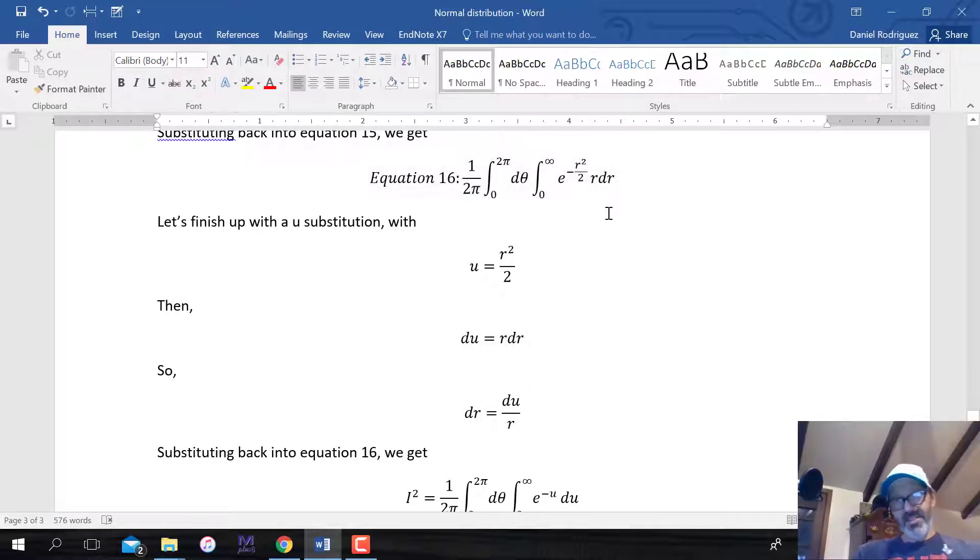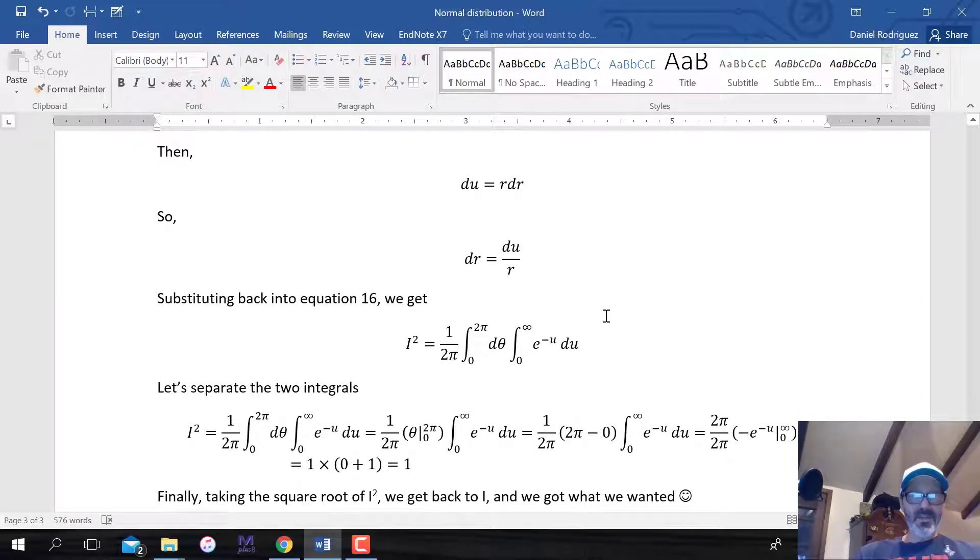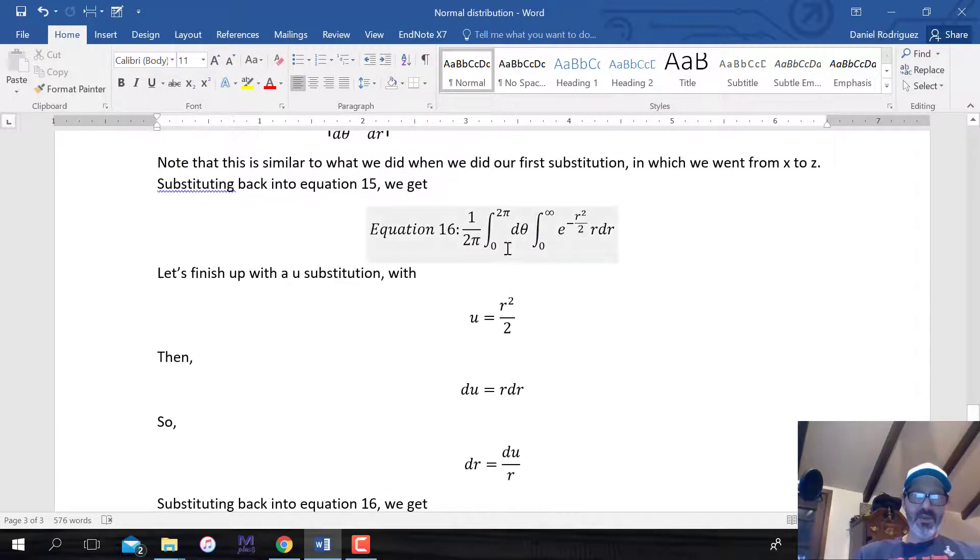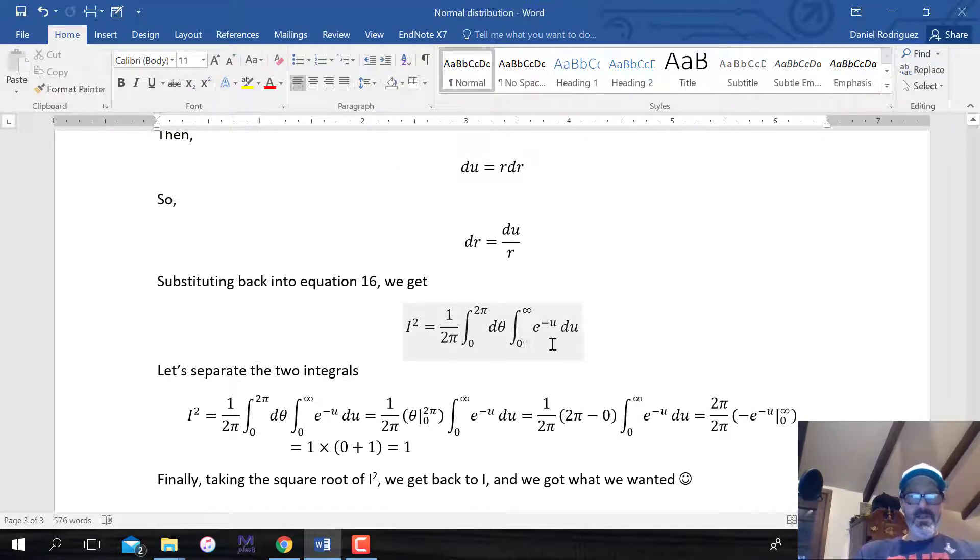Which conveniently gets rid of this little r here because now we're substituting du over r for dr. So those r's are going to cross out. This is what we're left with. Notice I also broke it apart here because this is the integral for d theta going from zero to 2 pi, and this is the integral for r going from zero to infinity. And this is what we have left. Now this is really easy to do.